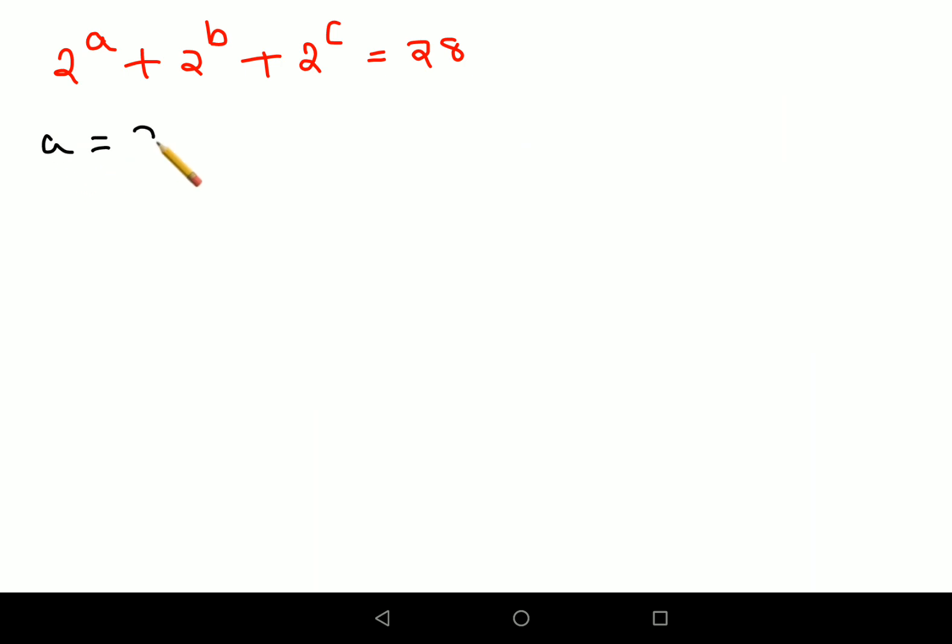So here basically I got a value as 2, and my bracket which was 1 plus 2 raised to b upon 2 raised to a plus 2 raised to c upon 2 raised to a, and this was still equal to 7.